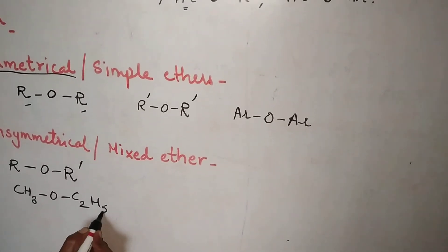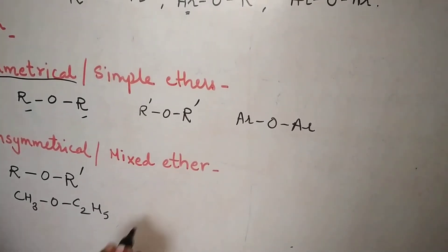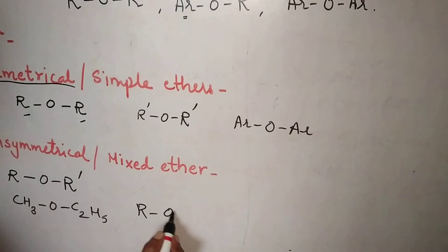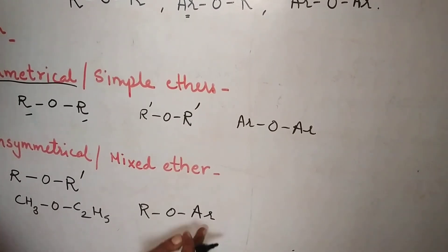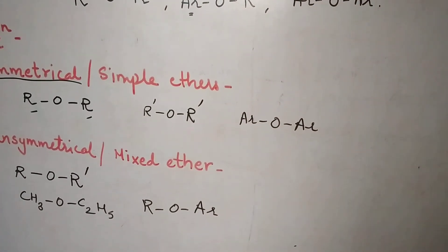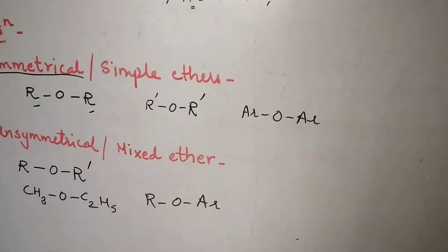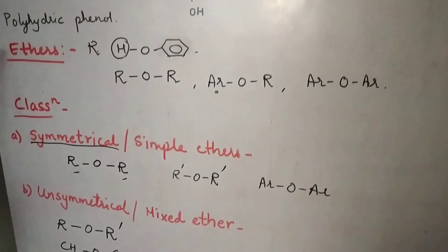Example can be CH3 O C2H5. This is an example of a mixed ether. Or you can have R and other group as Ar. Again this is example of a mixed type of ether. So this makes an easy part for phenols and ethers.